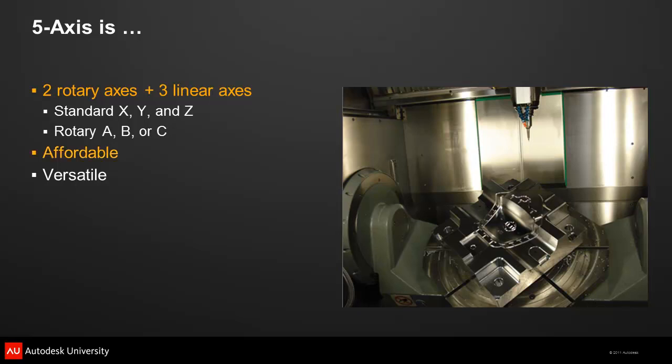You can now get 5-axis machines that are similar in size to a standard mill, and at a price that makes them absolutely affordable to even the smallest shops. The versatility of these machines makes them very appealing, since you can do so much more with just one machine.